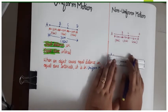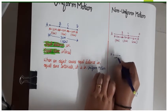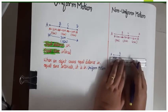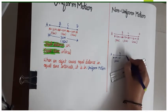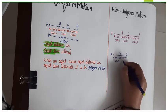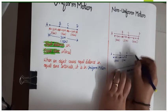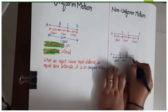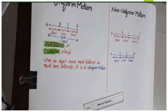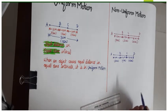Again, if we take another example in which the object starts its motion from point A and covers a distance of 10 meters to reach point B, taking 2 seconds. Then from point B it goes to point C, also at a distance of 10 meters, but this time it takes 7 seconds. Then it goes to point D, also at a distance of 10 meters, and the object takes 3 seconds to cover this distance.